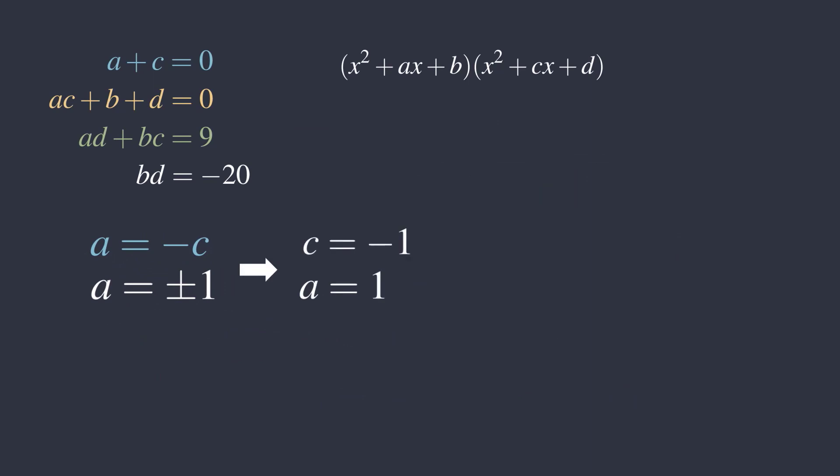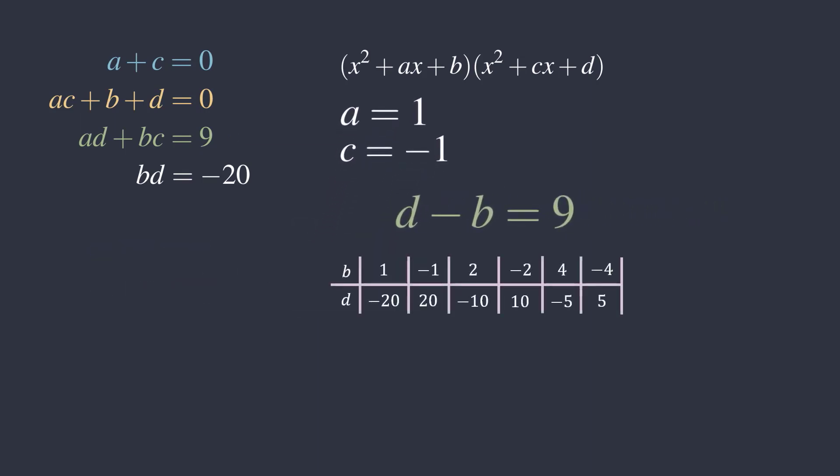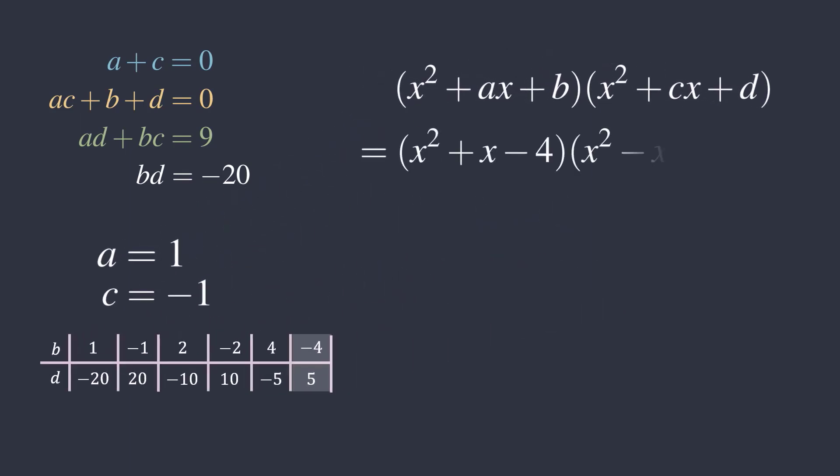Choose a to be 1, so c is negative 1. Plugging this into equation 3, we get d minus b equals 9. The only ordered pair b, d that satisfies d minus b equals 9 is negative 4, 5. Thus, we have our factorization.